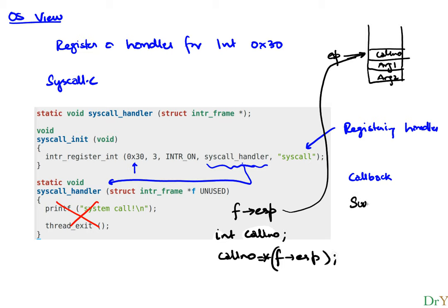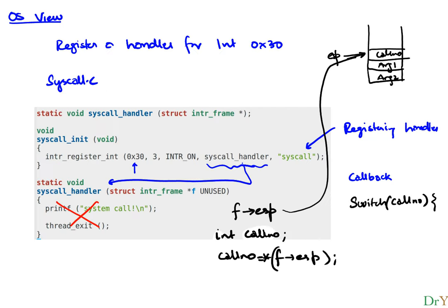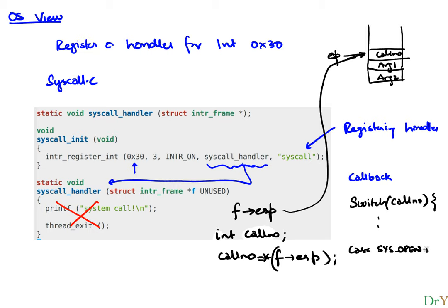The syscall handler is essentially a big switch statement on the call number. For example, we can say case SYS_OPEN — using the same header file that defines the enum values — and handle whatever needs to be done for that particular syscall, followed by a break. That's how system calls are handled from within the operating system.